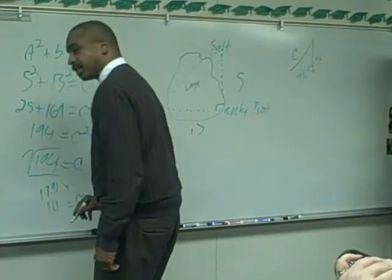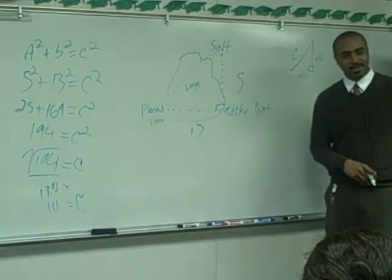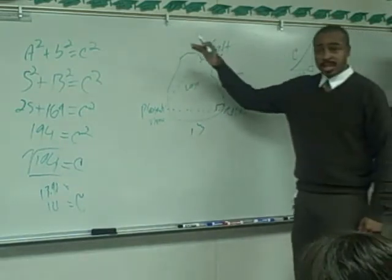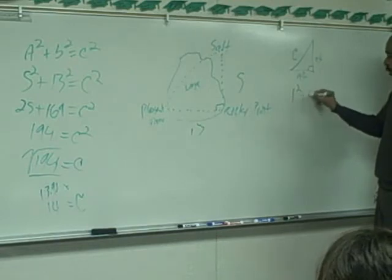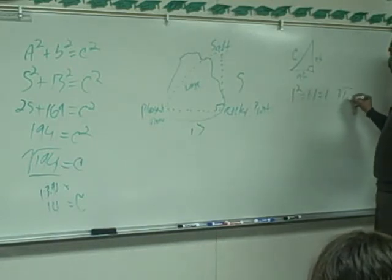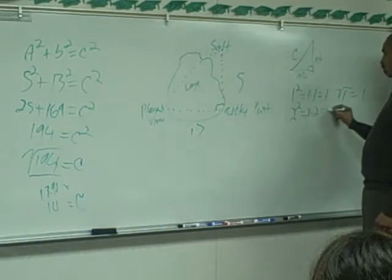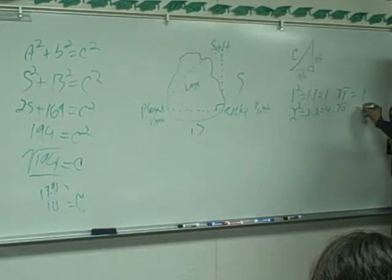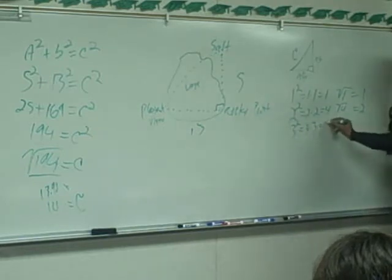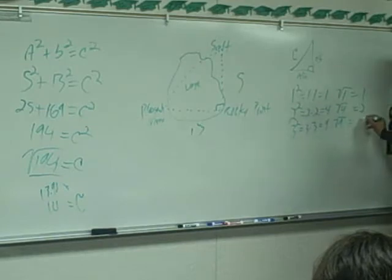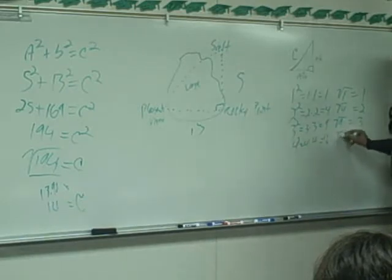Let's go back over that one. The Pythagorean theorem is A squared plus B squared. Let's review exponents real quick. So one squared is one times itself or one, and the square root of one is one. Two squared is two times two, which is four. The square root of four is what? Two. Three squared is three times three, which is nine. The square root of nine is what? Three. Four squared is four times four, which is 16. The square root of 16 is what? Four.